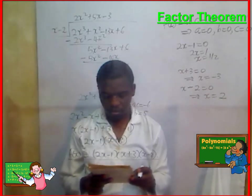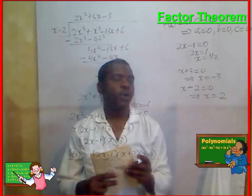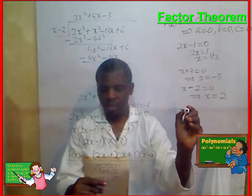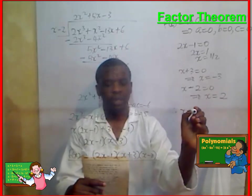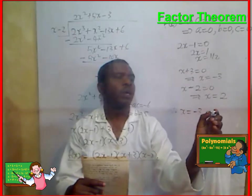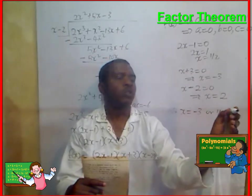Therefore, the possible values for x will be x is equal to minus 3, or half, or 2.